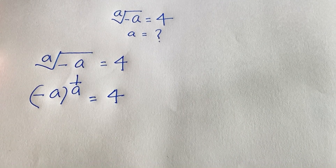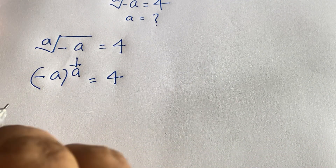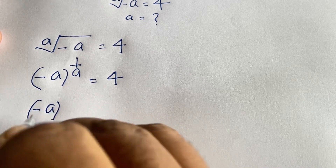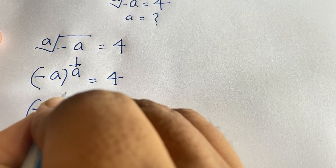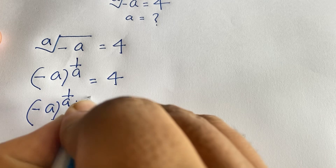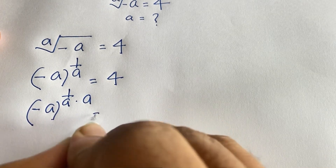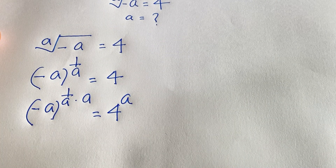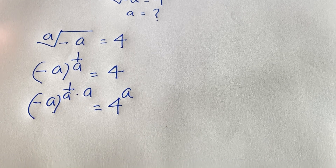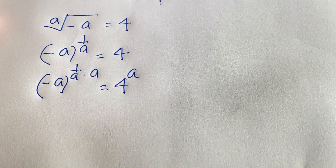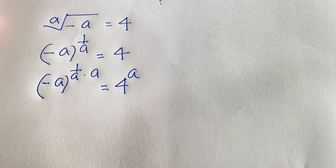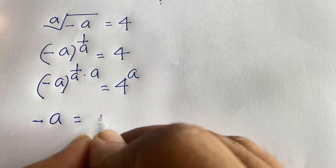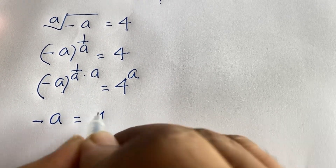Now I raise both sides to the exponent a. So minus a, whole to the power 1 over a times a, equals 4 to the power a. The 1/a and a cancel, giving us minus a equals 4 to the power a.